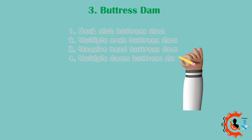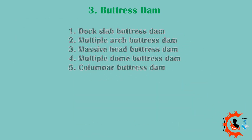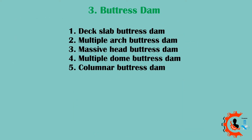Types of buttress dams: 1. Deck slab buttress dam. 2. Multiple arch buttress dam. 3. Massive head buttress dam. 4. Multiple dome buttress dam. 5. Columnar buttress dam.